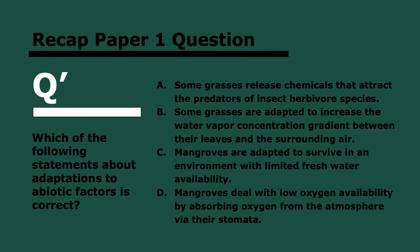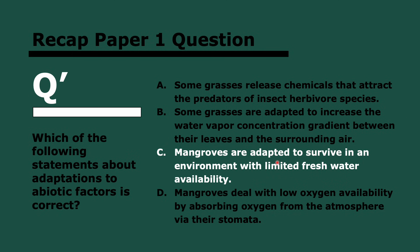The final question: which of the following statements about adaptations to abiotic factors is correct? The answer is C. Option A — attracting predators — is not an abiotic factor, it's living. Option B — increasing water vapor concentration gradient between leaves and air — would only increase transpiration leading to more water loss. Option D is incorrect because mangroves do not absorb oxygen through stomata; they do so through specialized structures in their roots. Therefore, C is correct: mangroves are adapted to survive in an environment with limited freshwater availability, because the sea floods them constantly.